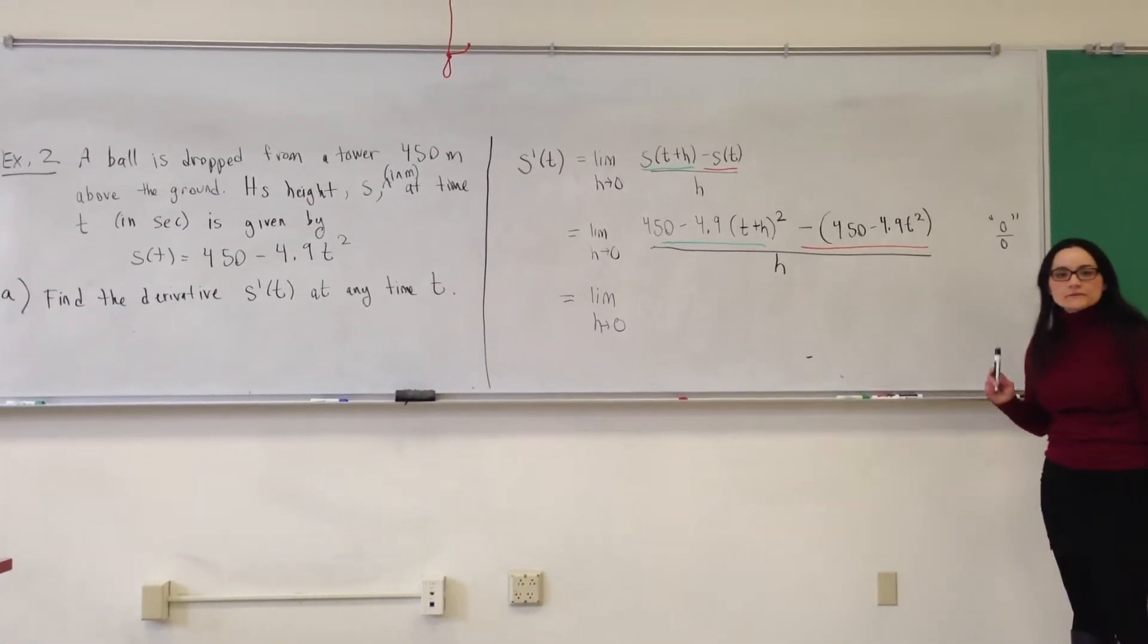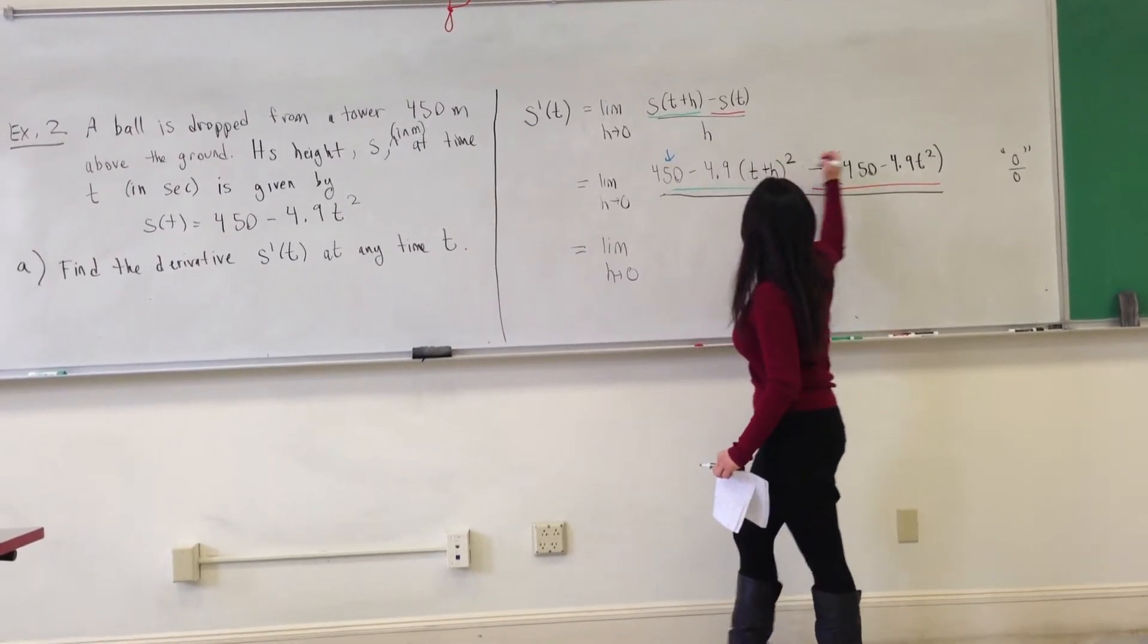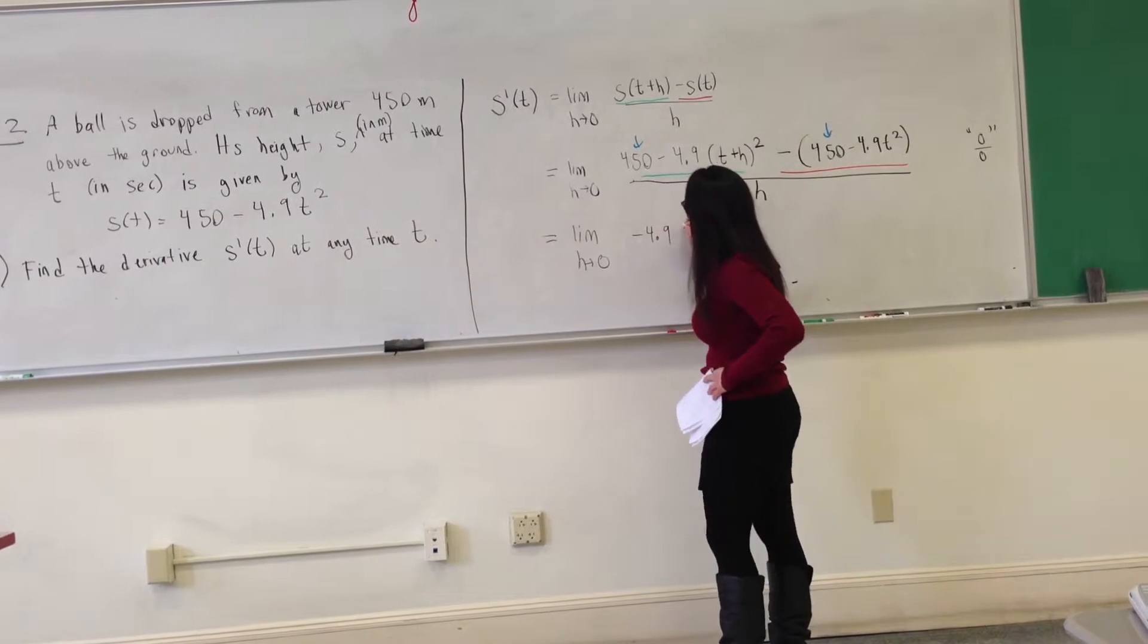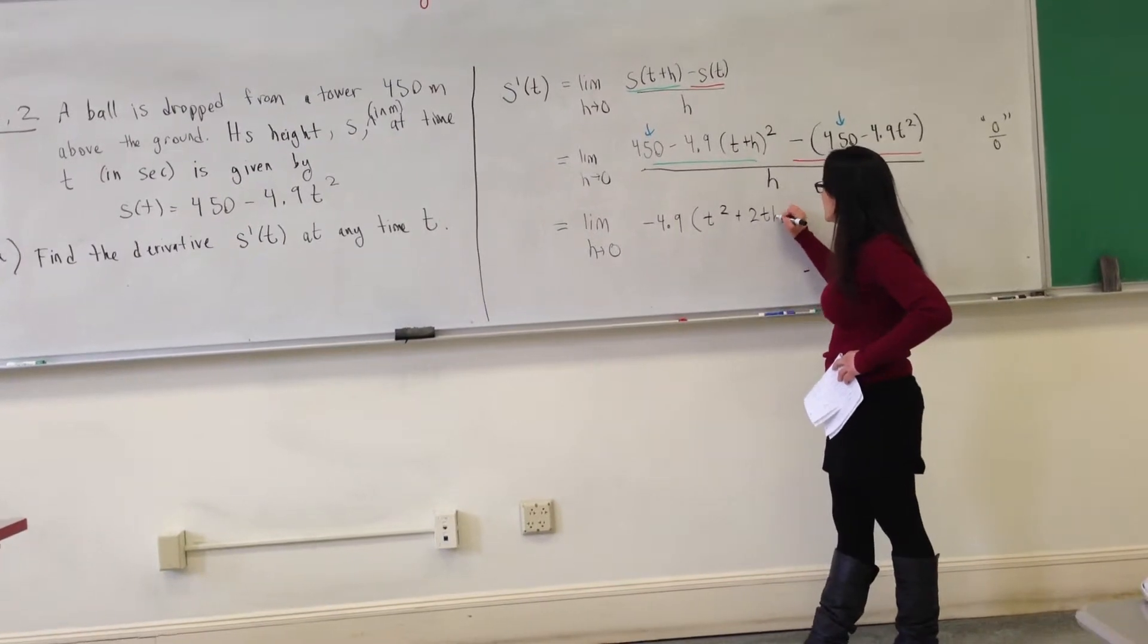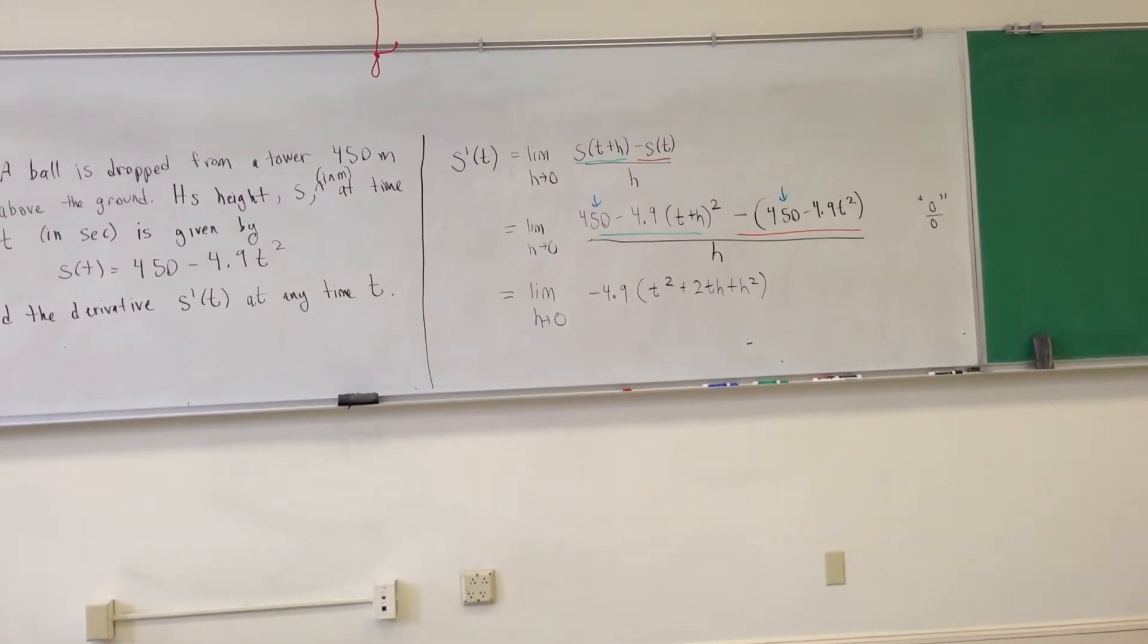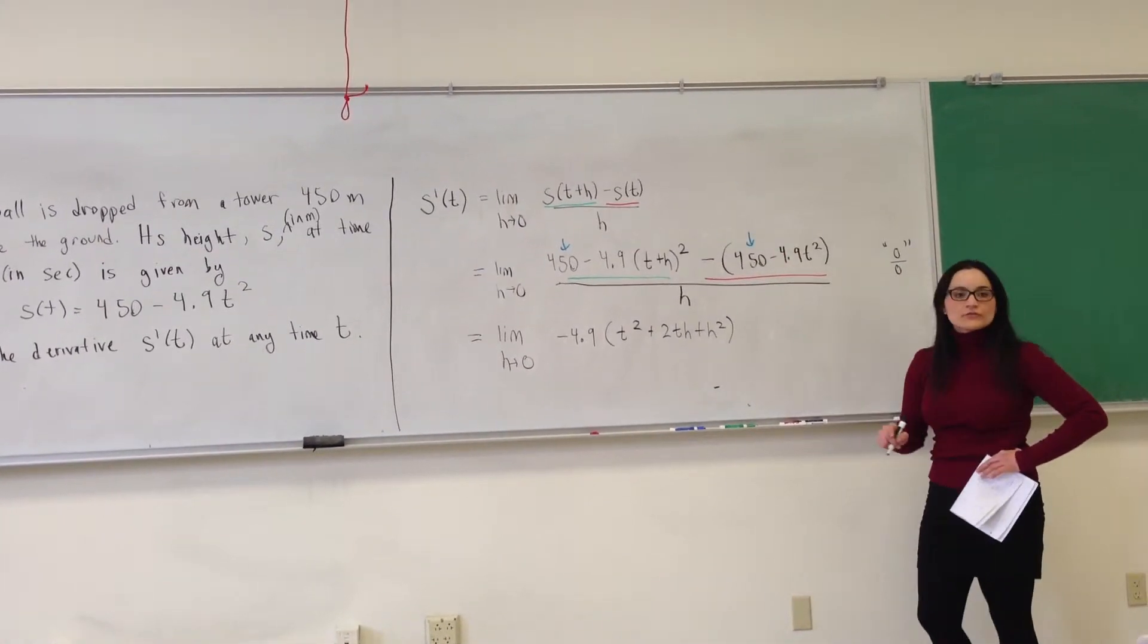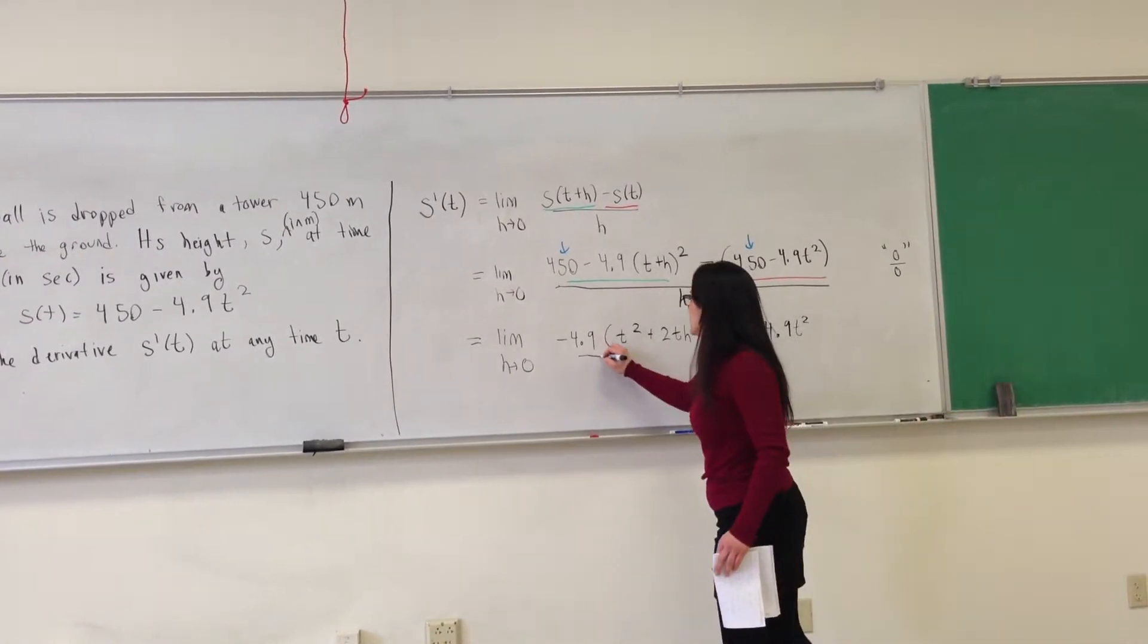Can I cancel the 450s right away? So, this 450 is going to cancel with that 450. The 450's cancel. Let's expand out the t plus h squared. And I get negative 4.9 times t squared plus 2th plus h squared. And then I have minus, now the 450's I canceled. And I distribute the negative. So I have plus 4.9 t squared in the numerator.